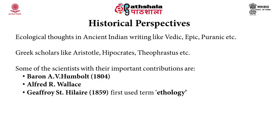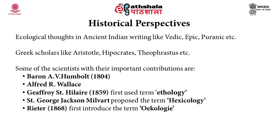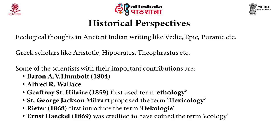Geoffrey St. Hilaire in 1859 first used the term ethology to refer to the study of the relationship of organisms with their environment. Saint George Jackson Milward proposed the term haxicology to refer to the study of organisms in relation to the nature of locality, temperature, and amount of light that best suit them, and also their relation with other organisms as enemies, rivals, or accidental and involuntary benefactors. Rieter in 1868 first introduced the term oecology to describe the interrelationship that exists between organisms and environment. Ernst Haeckel in 1869 was the first German biologist credited with coining the term ecology and used it widely in his literature, precisely describing and giving the definition of the term ecology.